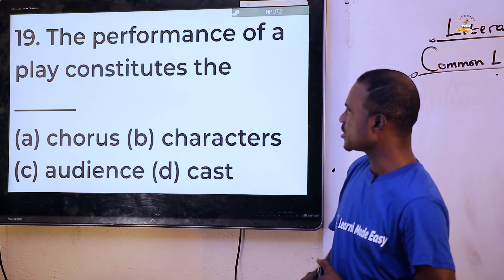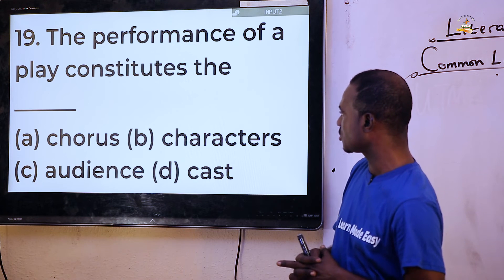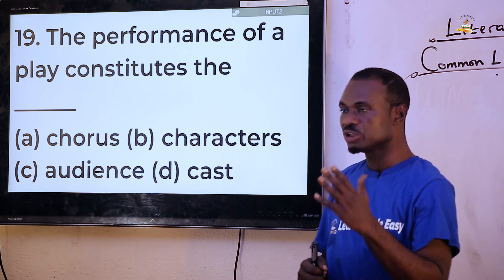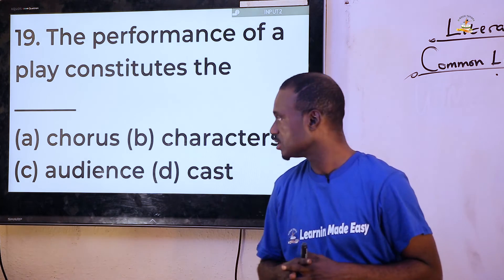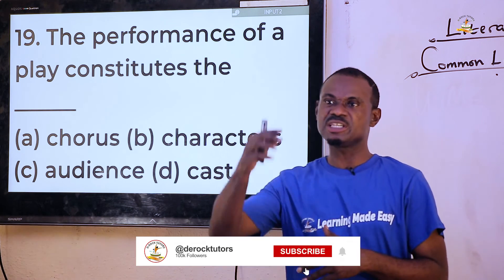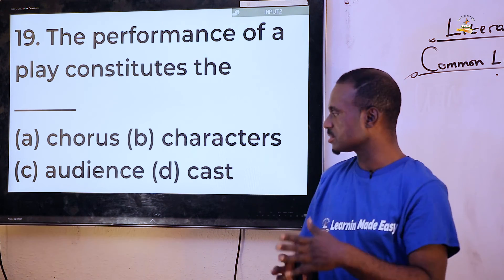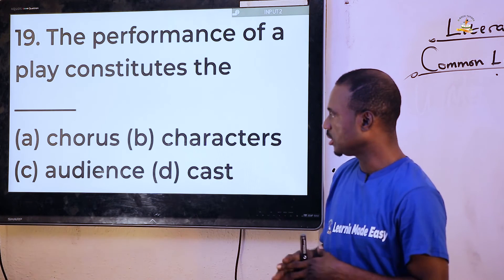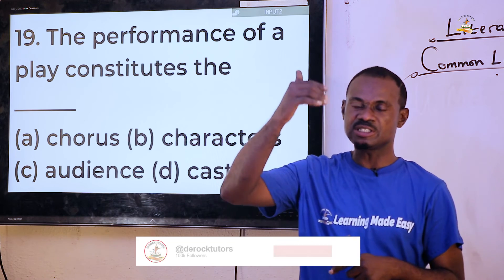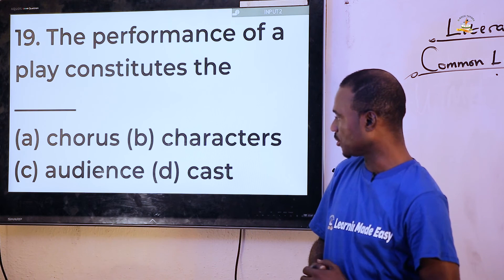Question twenty: 'The performance of a play constitutes a dash.' Options are chorus, characters, audience, and cast. The answer is cast, because in a play we have the list of actors and actresses in the work of art — not characters, not audience, not chorus — but cast, which defines the list of actors and actresses, especially in a play.